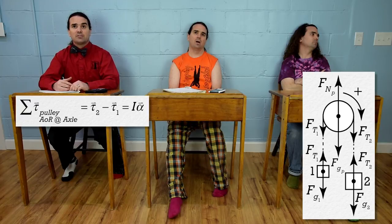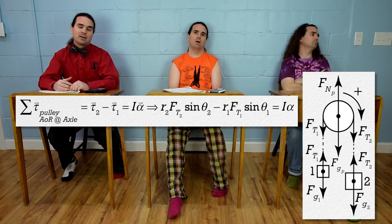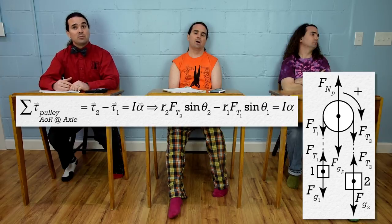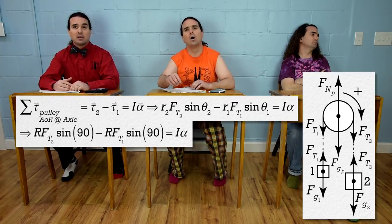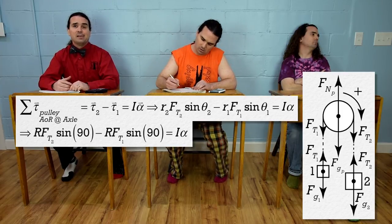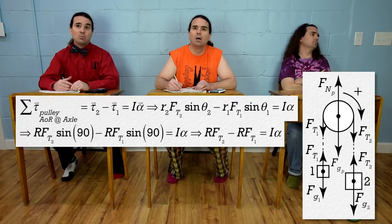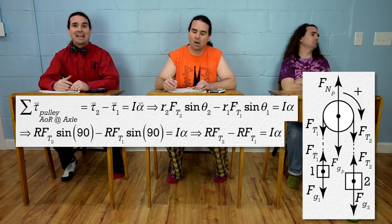Because both the normal force and gravity act on the axis of rotation, neither will cause a torque on the pulley. Therefore, the net torque equals the torque from tension 2 minus the torque from tension 1, which also equals the rotational inertia times angular acceleration. Substituting torque equals R times force times sine of theta, with both angles being 90 degrees, we get: pulley radius times tension 2 minus pulley radius times tension 1 equals rotational inertia times angular acceleration.